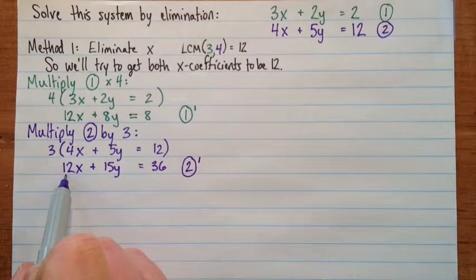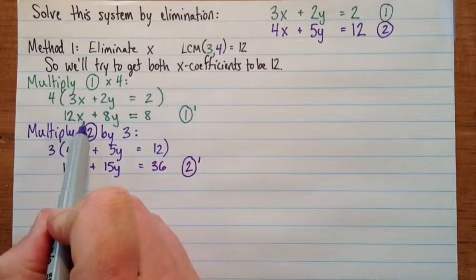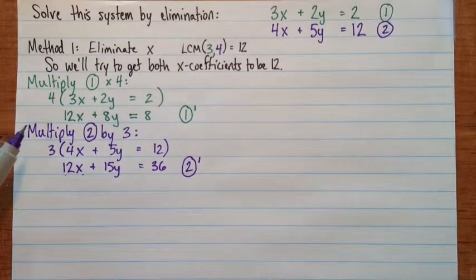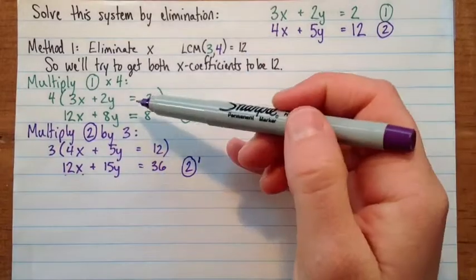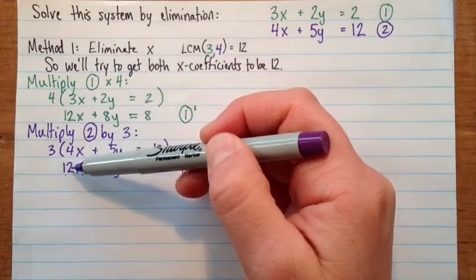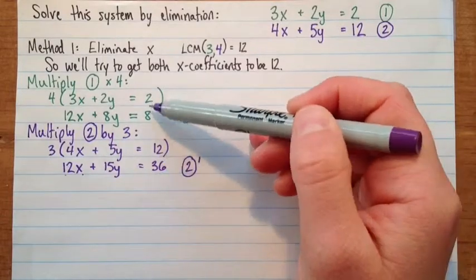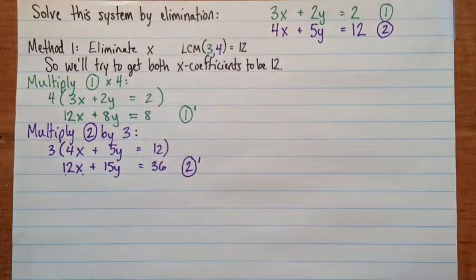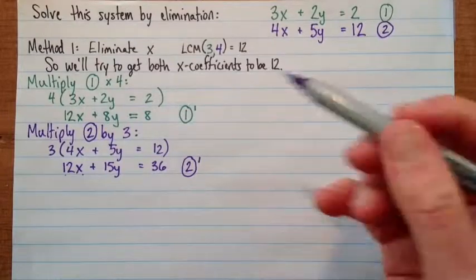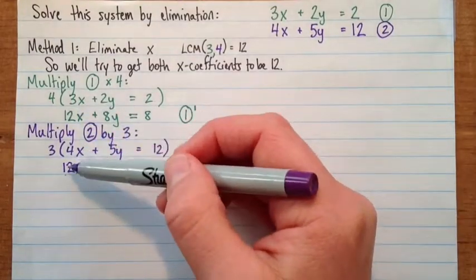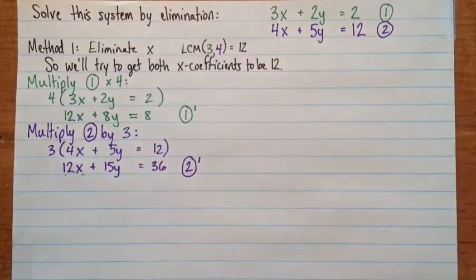Okay, so we've got the 12x here, and we've got 12x there. So this is perfect. So in the last video, we added the equations. But if we added these two equations, we'd end up with 24x plus 23y equals 44. So that wouldn't be any better than what we have now, because we're trying to eliminate a variable. But if we subtract one from the other, then we'll have 12x minus 12x equals 0x. So that's what we want.